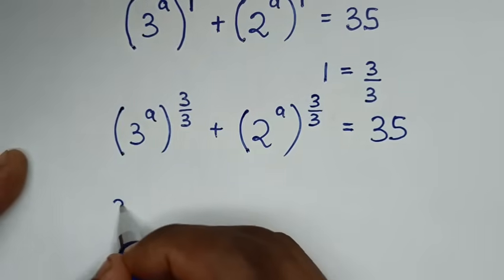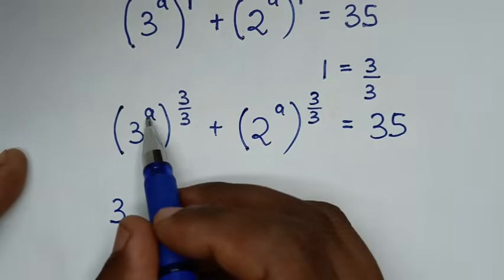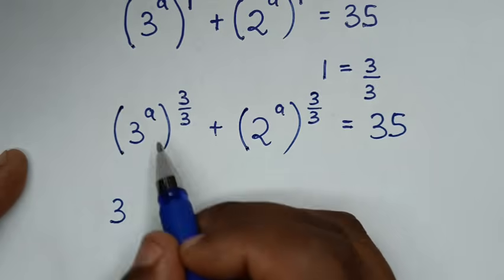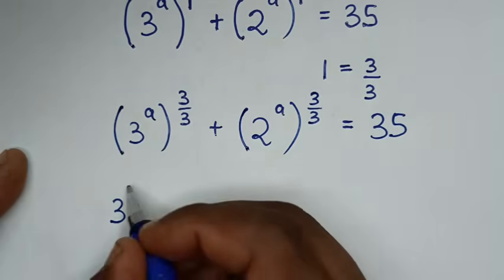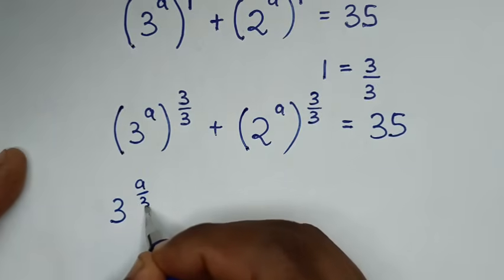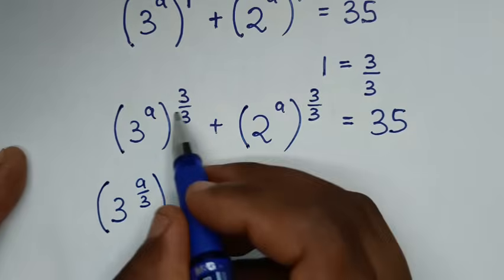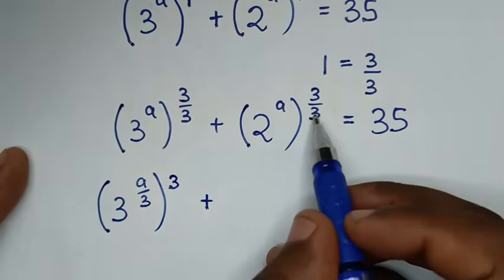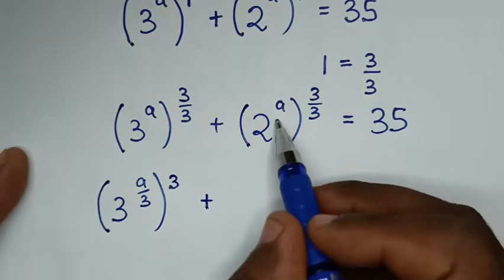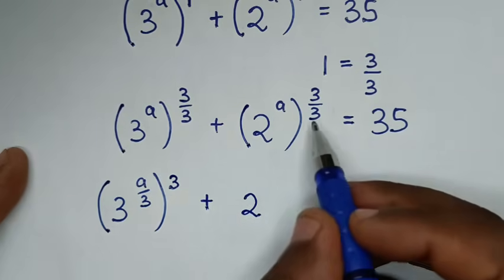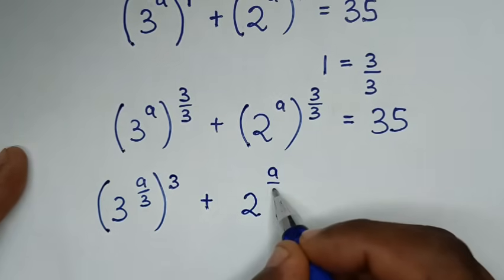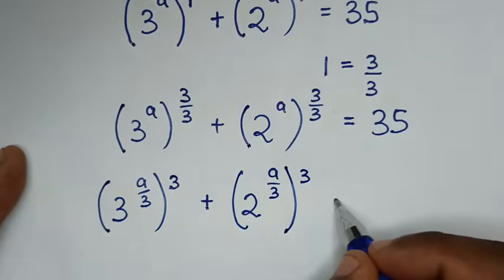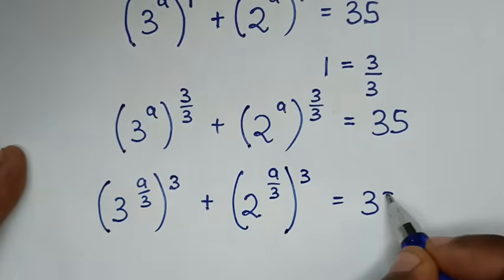In the next step, this base of 3 into this power, we take inside the bracket. So it will be a over 3 inside the bracket. Here it will be 3 outside the bracket. Then, here this base of 3 will take inside, so it will be 2 power of a over 3. So a over 3, then bracket power of 3 outside the bracket is equal to 35.